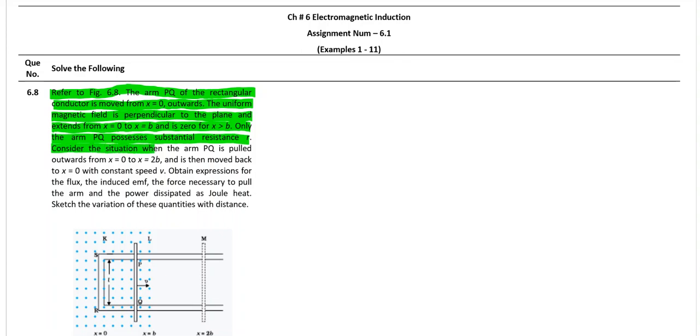Consider the situation when the arm PQ is pulled outward from x equal to 0 to x equal to b and is then moved back to x equal to 0 with constant speed v. Obtain the expression for the flux, the induced emf, the force necessary to pull the arm and the power dissipated as joule heat. Sketch the variation in these quantities with distance.